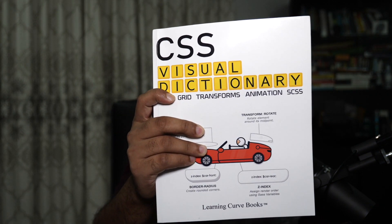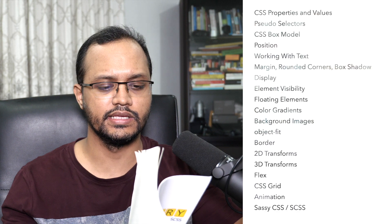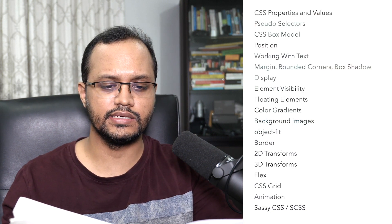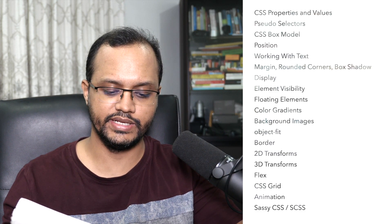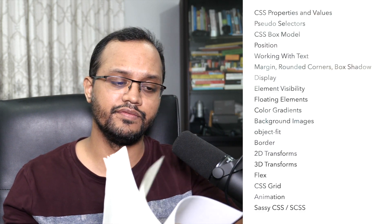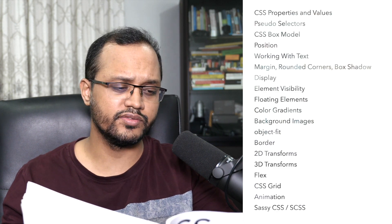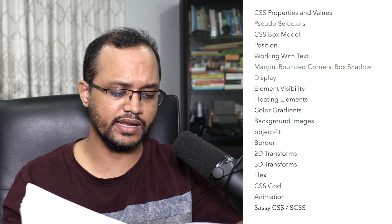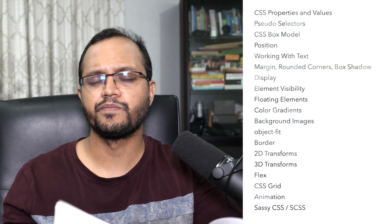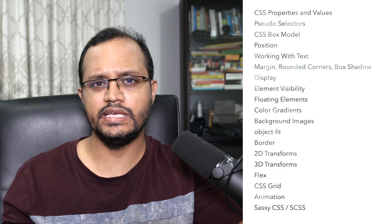I recently bought this book. The book is called 'CSS Visual Dictionary.' In this book, the author starts from CSS properties and values, then pseudo-elements, then pseudo-selectors. In the fourth chapter the author discusses the CSS box model, then position, working with text, element visibility, floating, and then you'll also learn how to do gradients in CSS, filters, and background images.